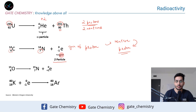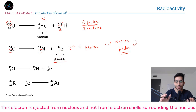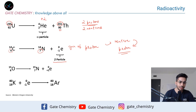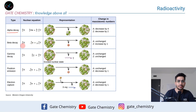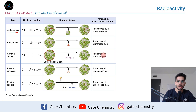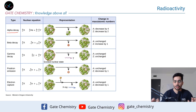A beta particle is emitted, which has the mass of an electron with a charge of minus one. Then we have gamma decay, which is nothing but emission of energy. There is no change in the mass number or the atomic number — a gamma particle is simply a form of radiation, some sort of energy.